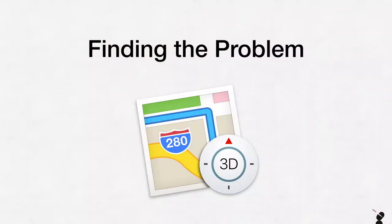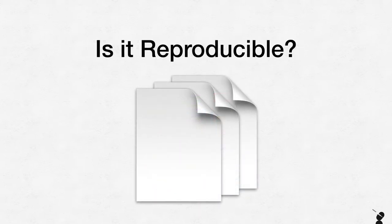As frustrating and irritating as it is, if you get back to basics and rule things out straight away, you can start to find the problem. So be systematic with your approach. Is it reproducible? Can you trigger it? Typically if you can trigger it, you can locate it very quickly. That's step number one: do I know how to cause this? If I know how to cause it, I can usually wrap it up in a very nice neat little bundle.